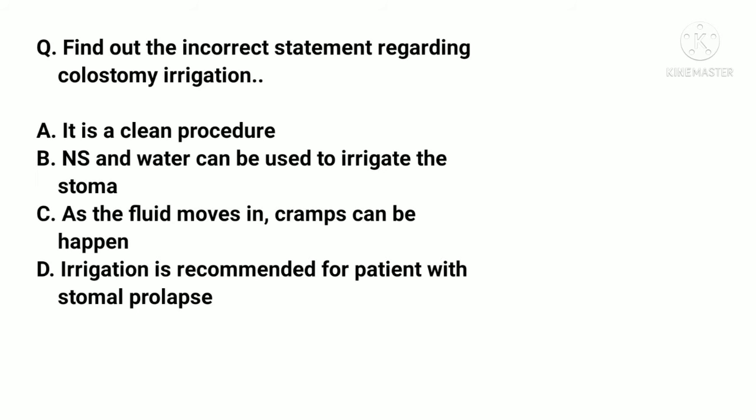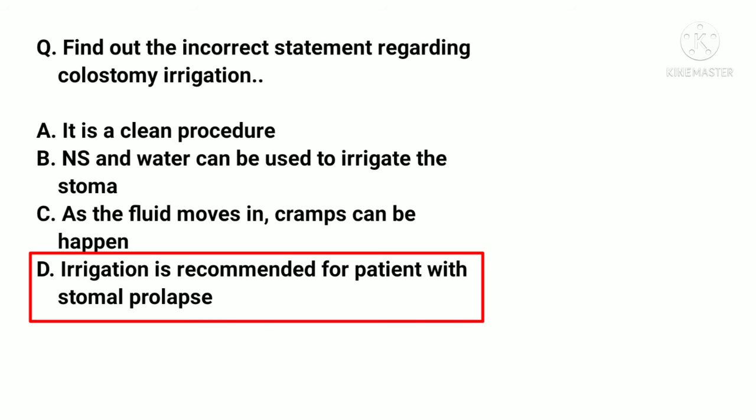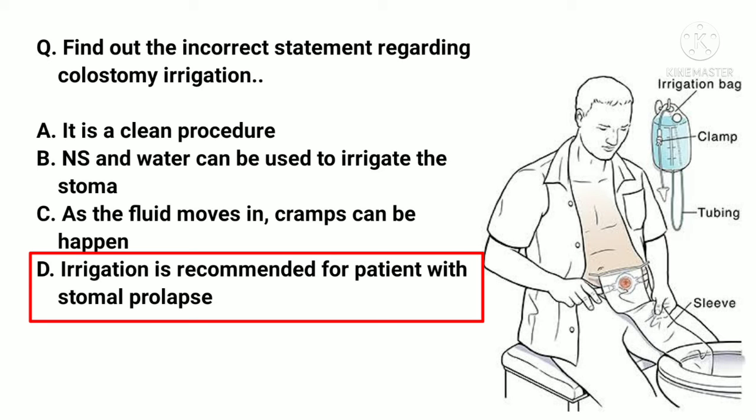Find out the incorrect statement regarding colostomy irrigation. A. It is a clean procedure. B. Anise and water can be used to irrigate the stoma. C. As the fluid moves in, cramps can happen. D. Irrigation is recommended for patients with stoma prolapse. The correct answer is D. Colostomy irrigation in a patient with stoma prolapse can increase the risk of further stoma prolapse.